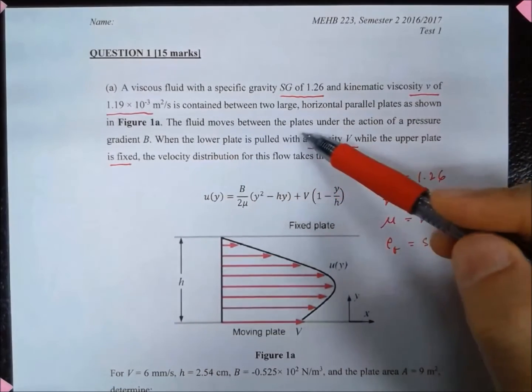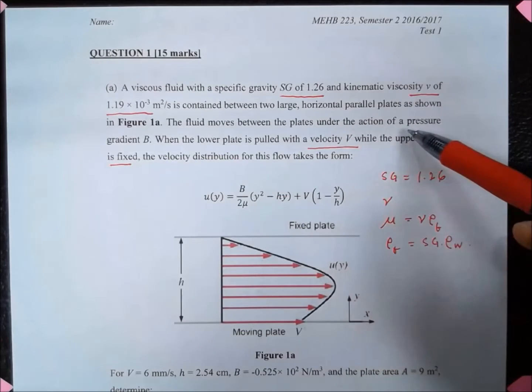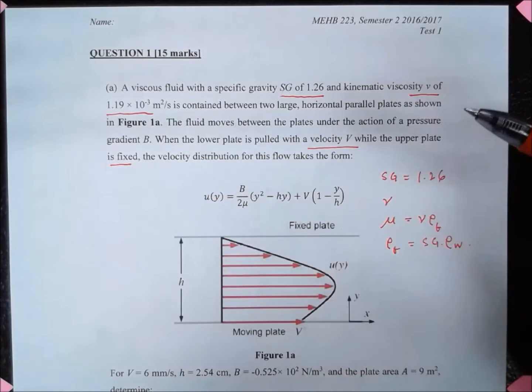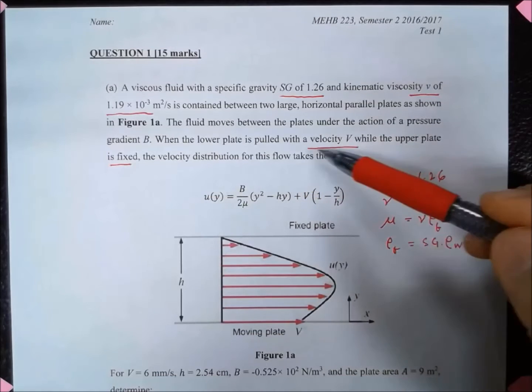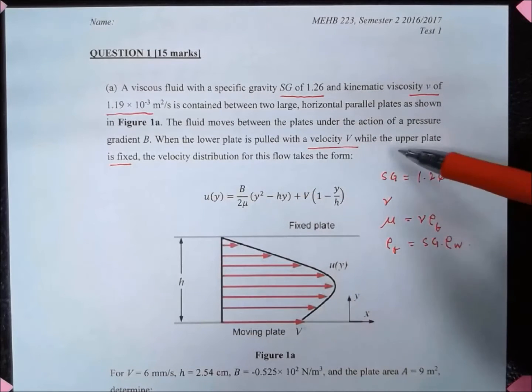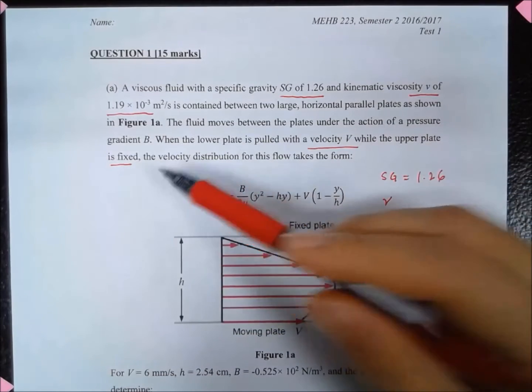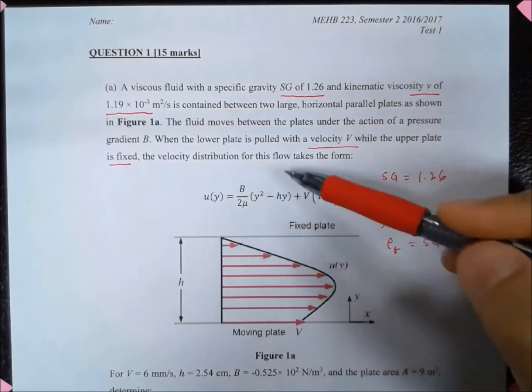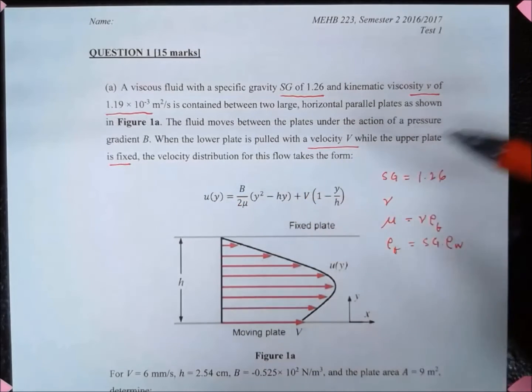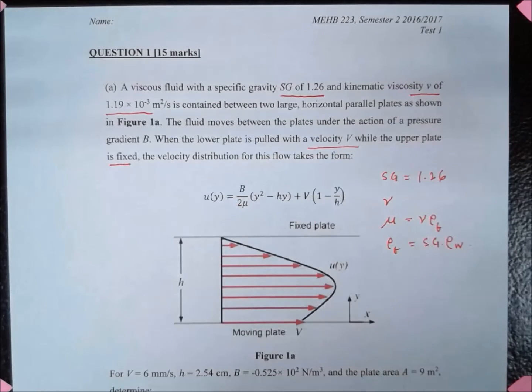The fluid moves between the plates under the action of a pressure gradient B, which is constant, and the lower plate is pulled with velocity V while the upper plate is fixed. The velocity distribution for this flow is given by the following equations.